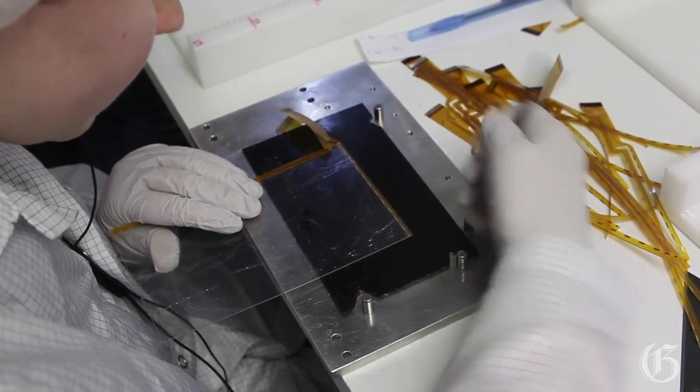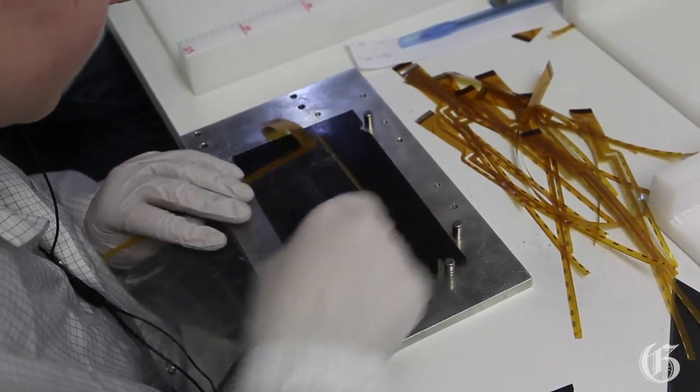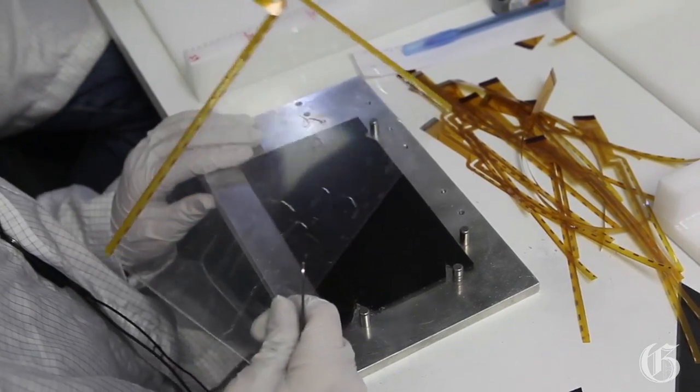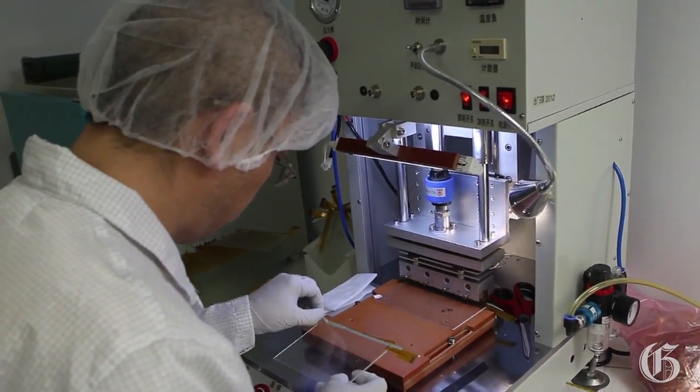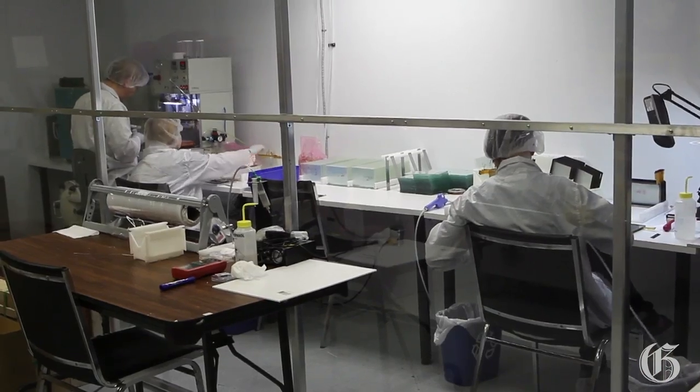For the assembly we start by putting ACF on glass substrate. Then we go to the bonding in order to put some flexes on top of those glasses.